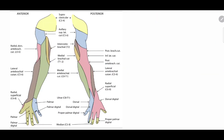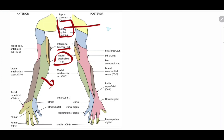Looking at this diagram, you can see the intercostobrachial nerve and the area supplied by T2. Then we have the medial cutaneous nerve of the arm, and the area supplied by the medial cutaneous nerve of the forearm. The precordium — the area where the heart overlies — is supplied by T2, T3, and T4.